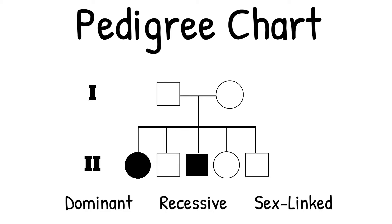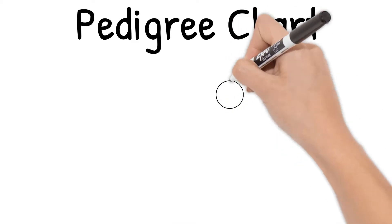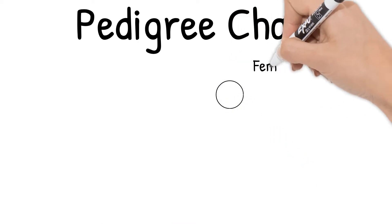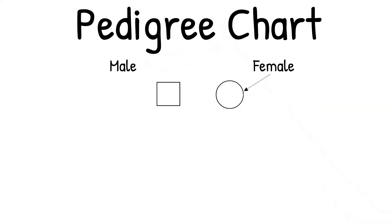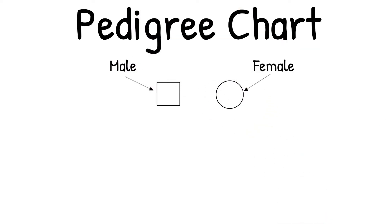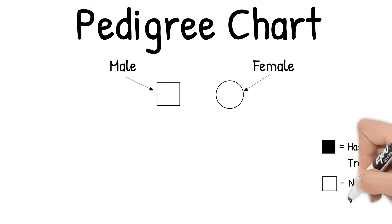First, let's learn what all these different symbols represent. A circle represents a female, and a square represents a male. If the shape is filled in, then the person has the trait being discussed. But if it's not filled in, then they are normal, without the trait.